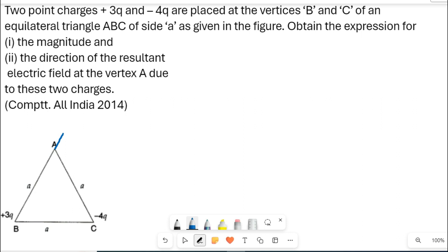First we have to draw the electric field at point A due to plus 3Q charge. Then draw the electric field at point A due to minus 4Q charge as shown here. After these two you can draw the resultant between these two electric fields. You can see the resultant electric field here.